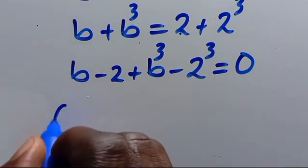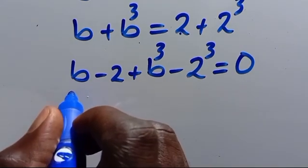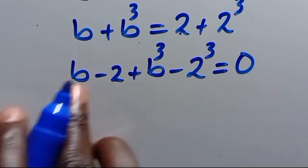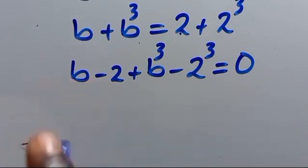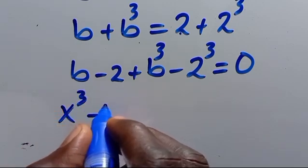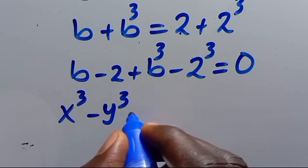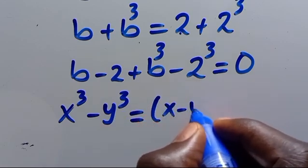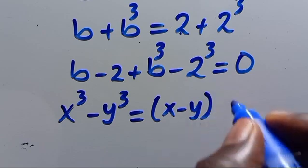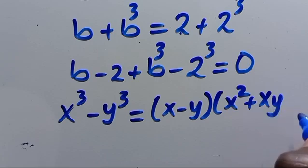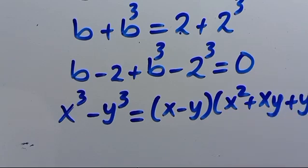When we have x to the power of 3 minus y to the power of 3, this equals x minus y, times x squared plus x·y plus y squared.